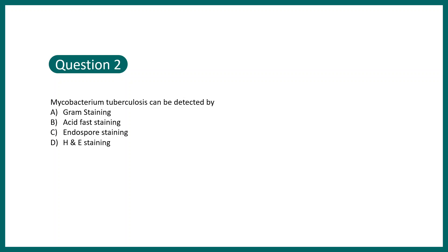Question 2: Mycobacterium tuberculosis can be detected by — gram staining, acid-fast staining, endospore staining, or H&E staining? Mycobacterium tuberculosis has a lot of mycolic acid on its cell wall, so gram staining cannot penetrate this thick cell wall. You need to do acid-fast staining with carbol fuchsin. A detailed video about acid-fast staining — covering acid-fast versus non-acid-fast organisms — is available via the i button on your screen.